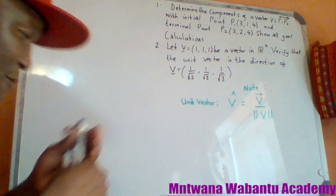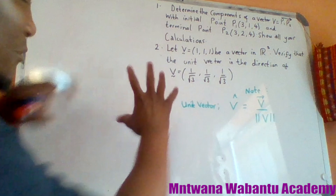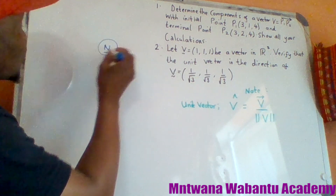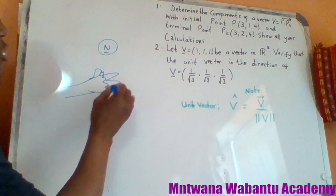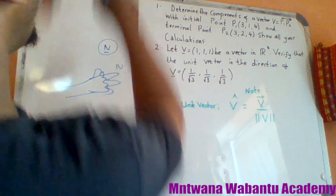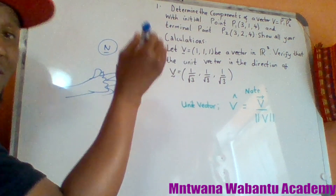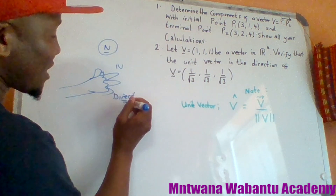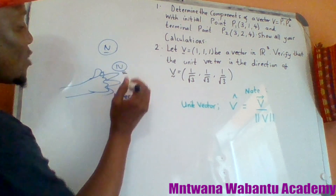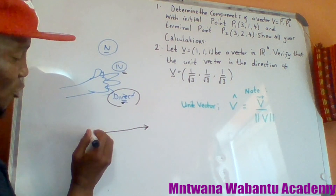A vector must always have a magnitude and a direction. For example, if I push this board I'm using a force, and that force is measured in Newtons — that's the magnitude. Then you also need a direction: north, south, east, west, forward, or backward. So any vector must have both a magnitude and a direction.